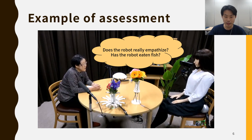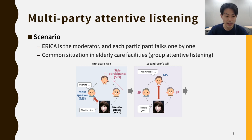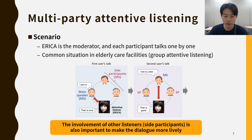In this demonstration, we extend the one-on-one attentive listening system to the multi-party attentive listening scenario. In this scenario, the robot Erica plays the role of moderator, and each participant talks one by one. This style is the common situation in elderly care facilities, and it is called group attentive listening. In this case, the involvement of other listeners, called side participants, is also important to make the dialogue more lively and active.